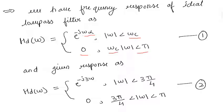And the given response is HD of omega equals e raised to minus j 3 omega for modulus of omega less than 3 pi by 4, and 0 for modulus of omega in between 3 pi by 4 to pi.